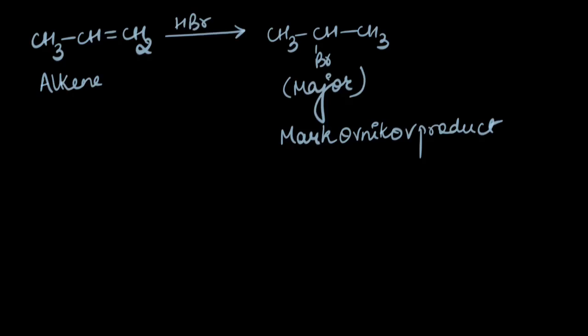We have been treating alkenes with hydrogen halides and we have already figured out what happens when an alkene is treated with HBr. Bromine attaches to the more substituted carbon. It is called a Markonikov product.